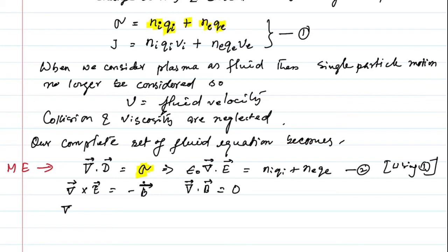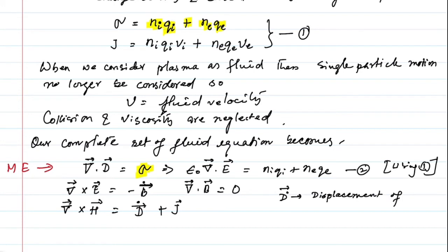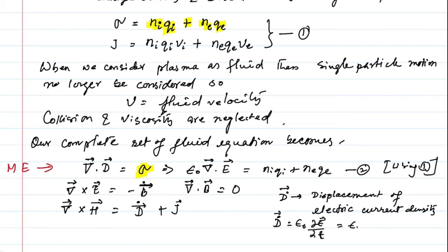Also from Maxwell's equations, we have curl of H equal to D-dot plus J, where D-dot represents the displacement current density, which is given by epsilon-naught del E by del T, or epsilon-naught E-dot.